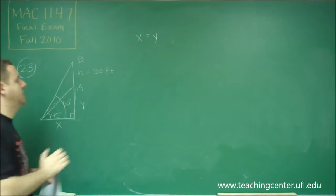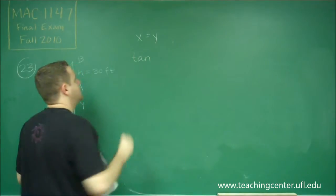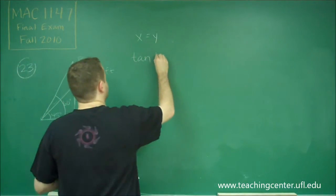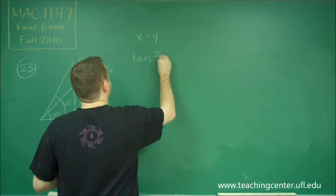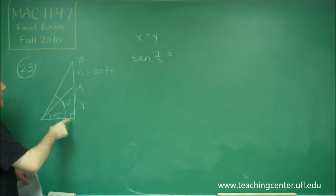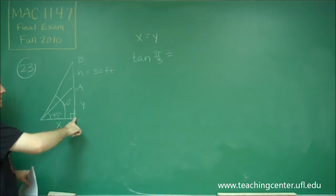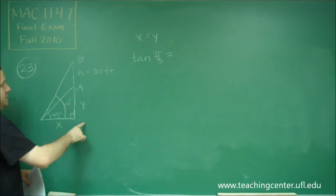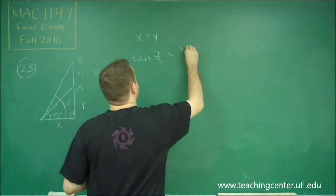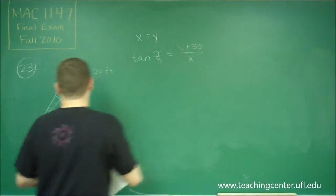The second triangle tells us that tangent of — instead of 60 degrees, I'm going to use the radian version, which is pi over 3 — tangent of pi over 3 has to equal the entire opposite side over the adjacent. This entire side is Y plus 30, over X.